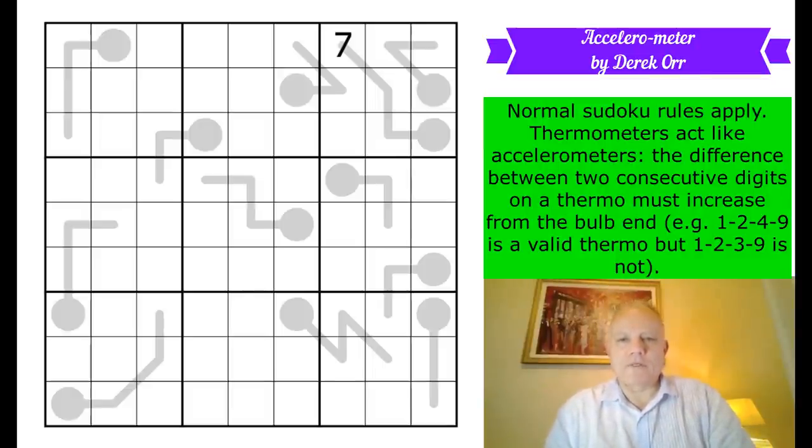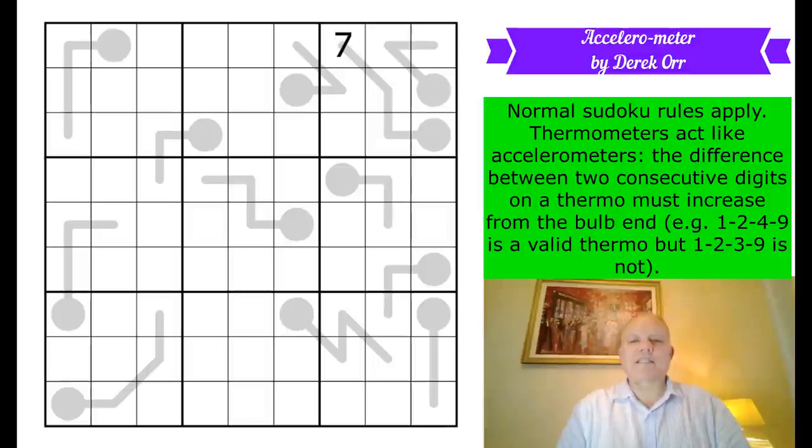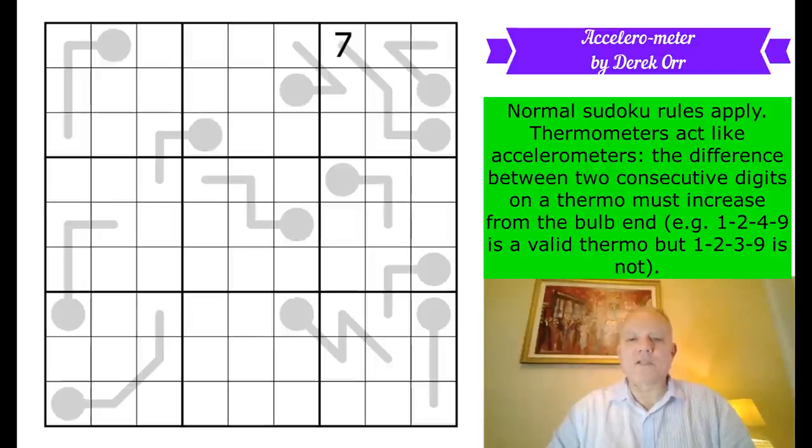This is from Derek Orr and it's called Accelerometer. Normal Sudoku rules apply. Thermometers, however, act like accelerometers. The difference between two consecutive digits on a thermo must increase from the bulb end. For example, 1, 2, 4, 9 is a valid thermo and you can see the differences there are going 1, 2, 5, so they're always increasing. But 1, 2, 3, 9 is not because 1, 2, 3 don't have increasing differences.